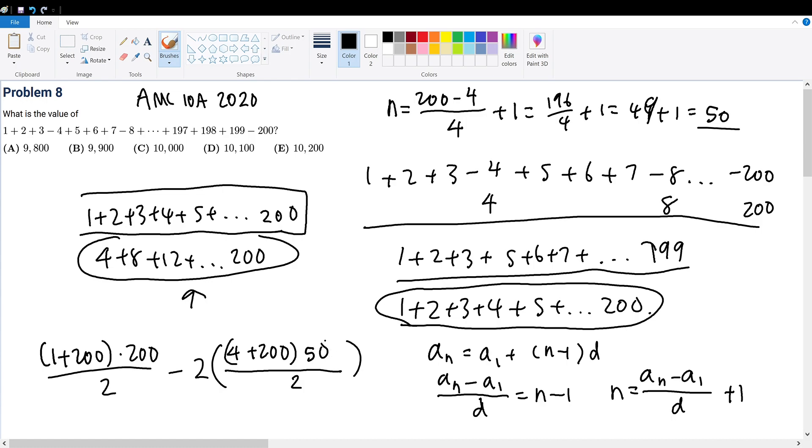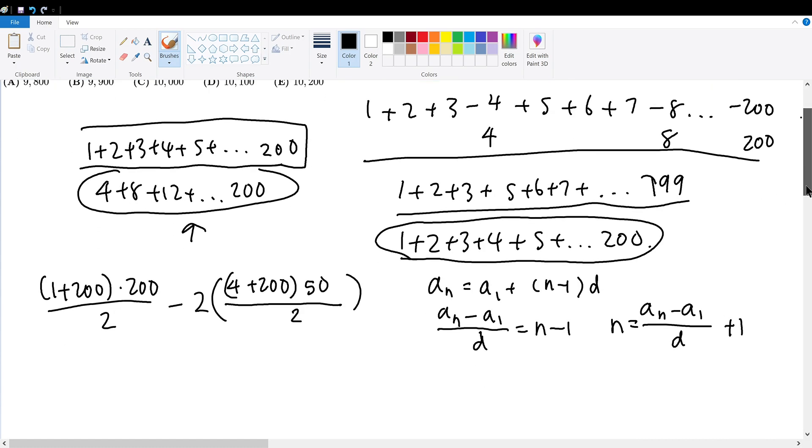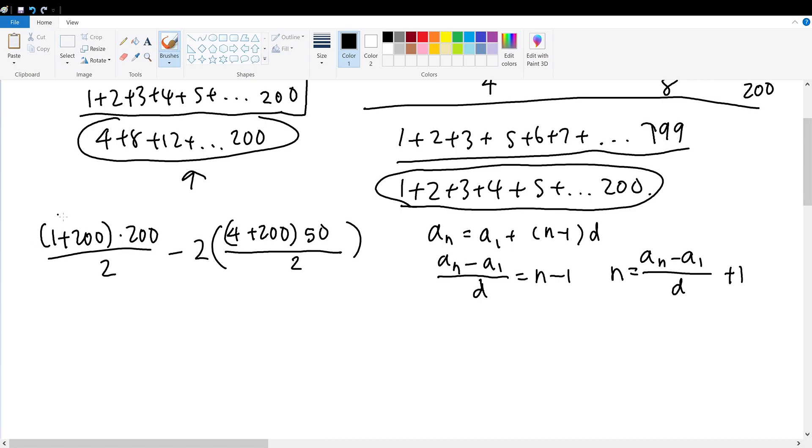So if we solve this equation, we will be done with the question. So 200 divided by 2 will be 100 times 201 will be 20100 minus, we can cancel out the 2, which is 204 times 50.